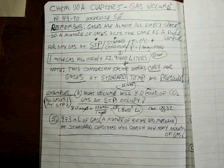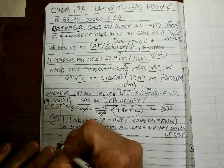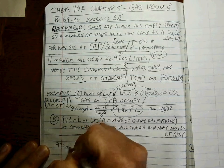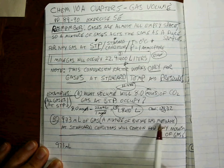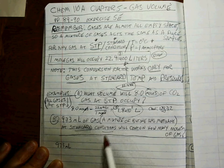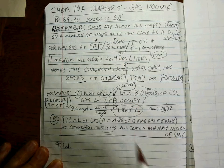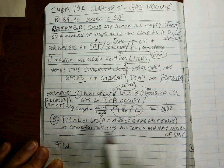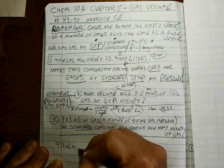The second problem is just as simple — one number to start with: 973 milliliters of gas that is a mixture of butane and methane at standard conditions. If I see standard conditions, I know I'm using 22.4. If I don't see standard conditions, I know I'm not allowed to use that. So we're going volume to moles, and the volume we have to use is liters, so we have to convert.